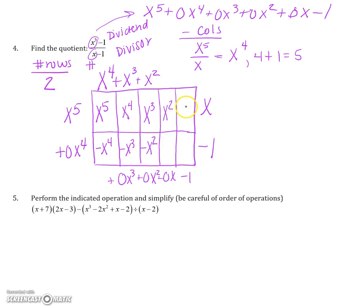x times what gives me x squared? That must be x. Finish out the column. x times negative 1 gives me negative x. Almost there. I want 0x. I have negative x, so this top box must be a positive x. Again, because x plus negative x, or x minus x, is going to give me 0x.